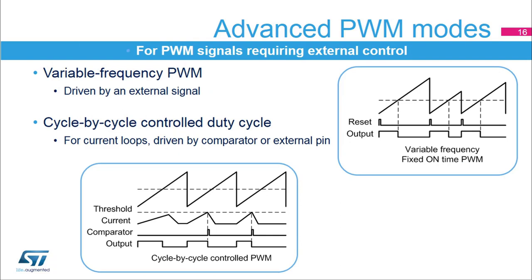Some more specific PWM modes allow either the frequency or the duty cycle to be driven by external signals. The timer can provide variable frequency signals using an external reset signal connected on the ETR or on channel 1 or 2 inputs. The purpose is to provide a signal with a fixed on or off time and a continuously adjusted frequency controlled by hardware. The compare register controls the on or off time, while the auto-reload register guarantees that the PWM will not stop if the external reset is missing, providing safe control in boundary conditions. This technique is used for transition mode PFC or current controlled digital LED lighting.